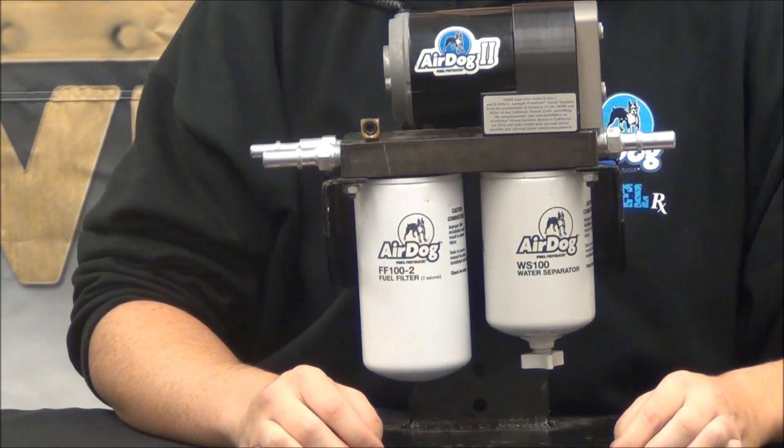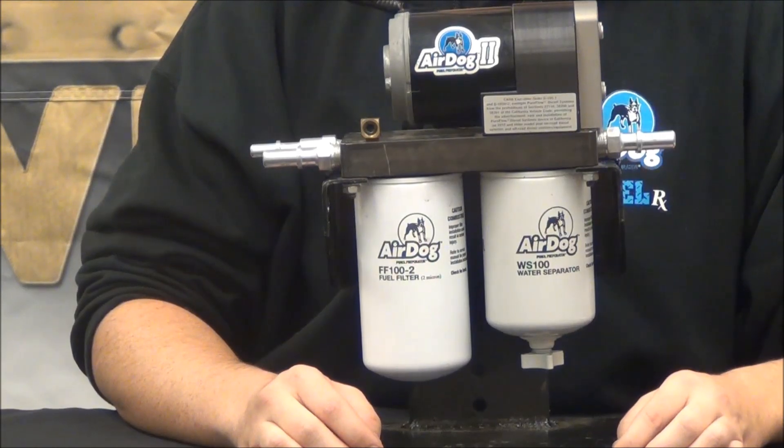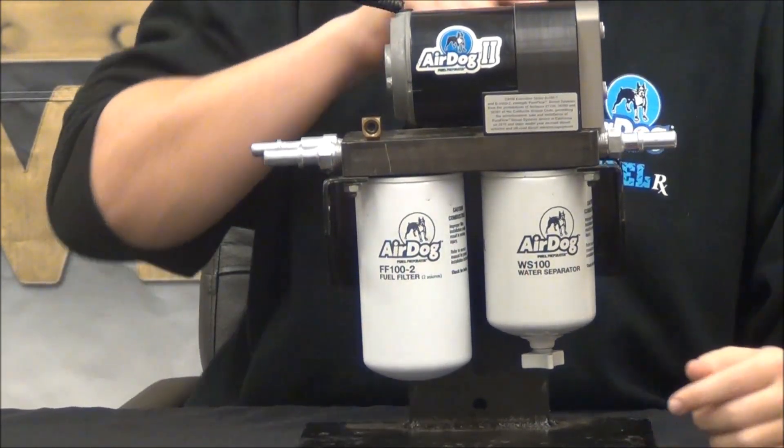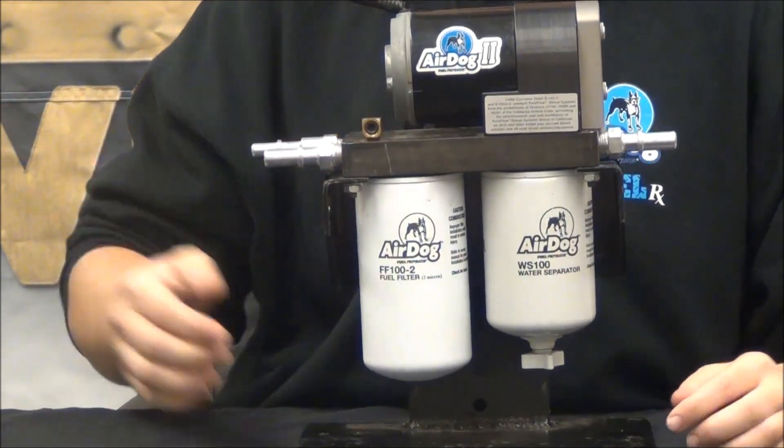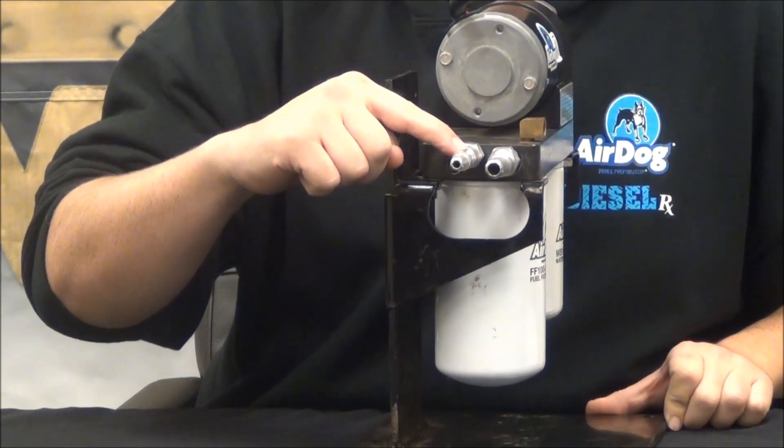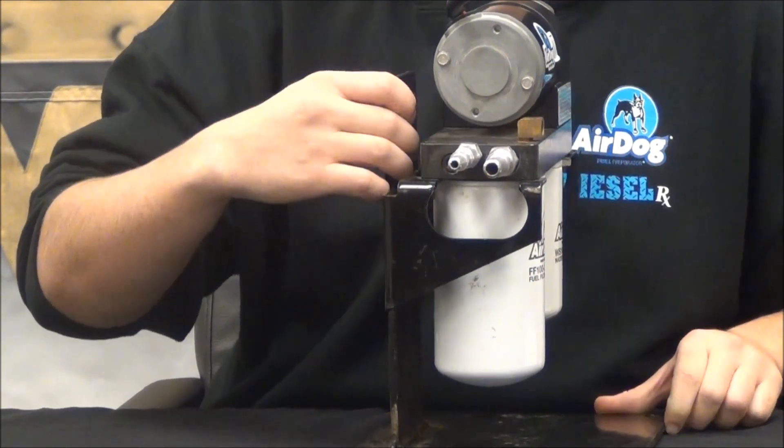When the engine demands more fuel, say at full throttle, the regulator closes, allowing the engine to use as much fuel as it needs. This pump also has its own dedicated air vapor return that returns the air vapor back to the tank at low flow. This reduces aeration in the tank.